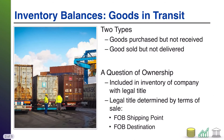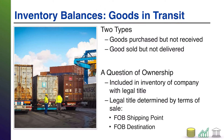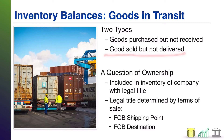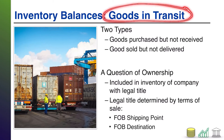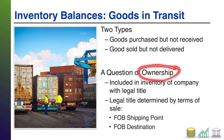There are a couple of exceptions to the physical count to consider. The first is goods in transit. There are two types: goods that you have bought but not yet received — still on the truck, plane, boat, or whatever method they're coming by — or goods you've sold but not yet delivered, again still in transit. Whether or not to count a good in transit in your inventory really depends on whether or not you own that good while it is on the truck.